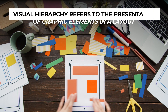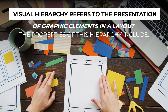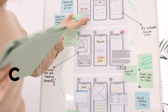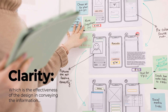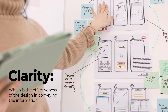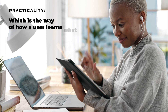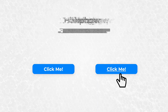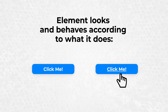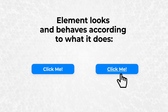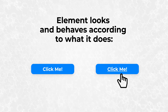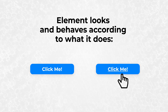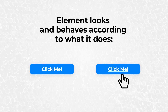Visual hierarchy refers to the presentation of graphic elements in a layout. The properties of this hierarchy include clarity, which is the effectiveness of the design in conveying information; practicality, which is how a user learns what to do on a particular screen; and affordance, which implies that an element looks and behaves according to what it does — like a button that appears sticking out from the two-dimensional background and suggests that we can click it.